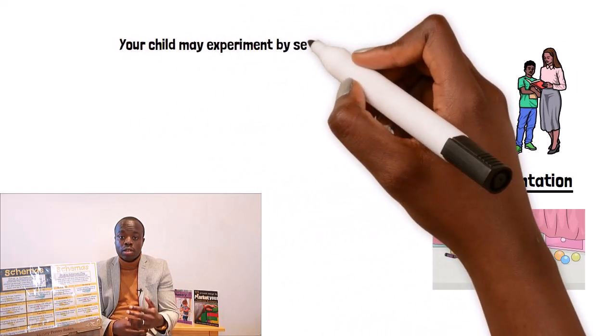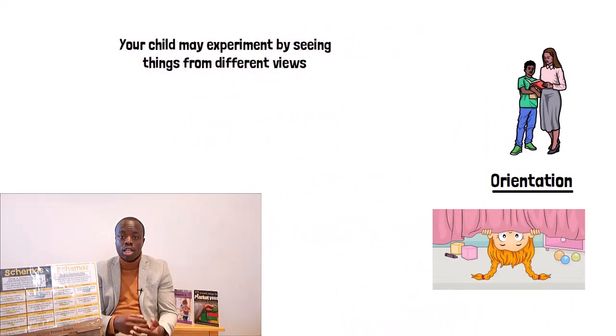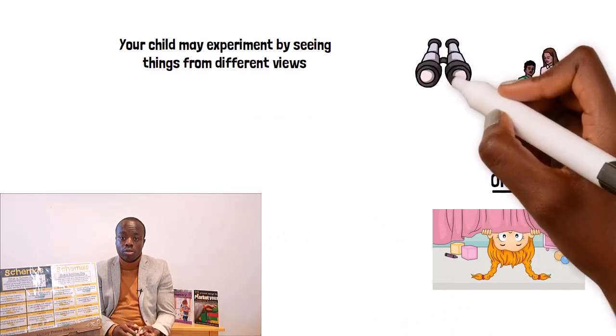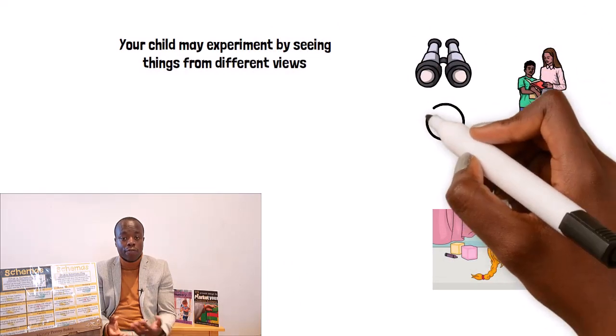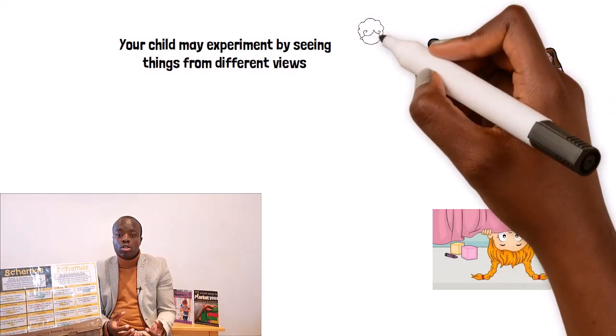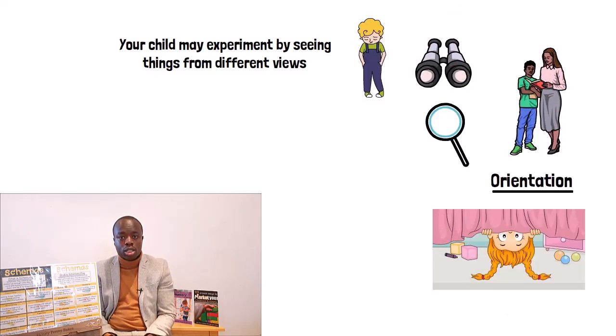They will start experimenting by looking at things with different viewpoints by using things like cardboard tubes, binoculars or magnifying glasses. Children displaying the schema may find it difficult to sit still.